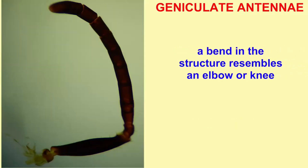In geniculate antennae, a joint — a bend in the antennae — resembles an elbow or a knee. This type of antennae is found in ants and bees.